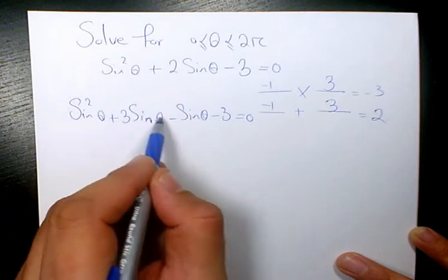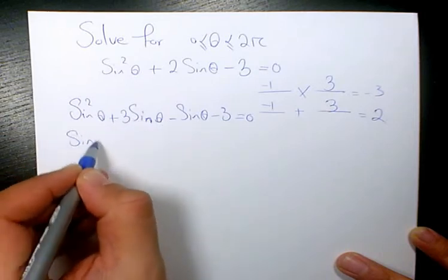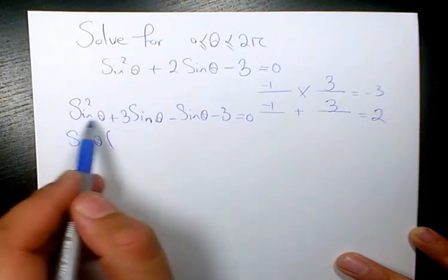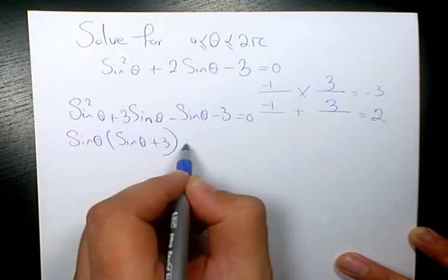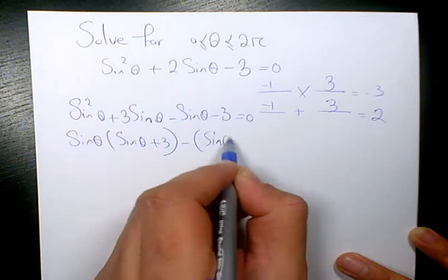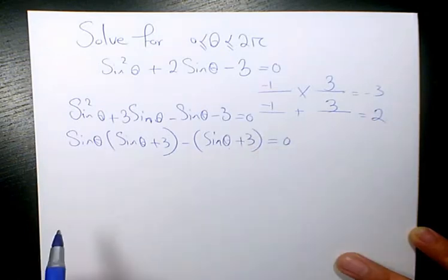Here we have sin²θ + 3sinθ. I factor sinθ because that's the GCF, and here we have sinθ + 3, and here we have sinθ + 3 equals to 0.